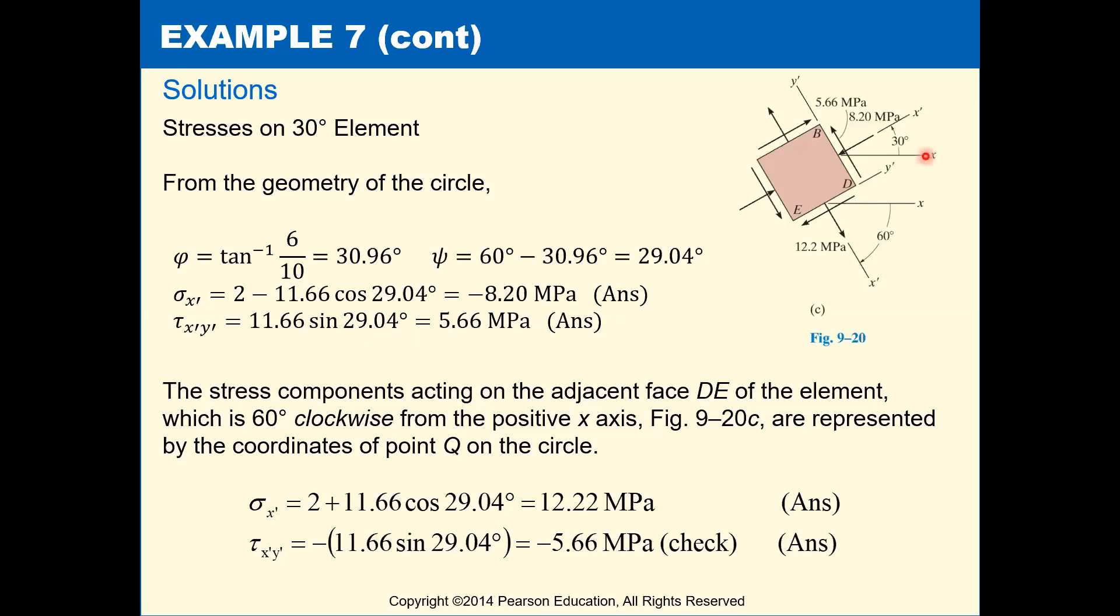So then you can start to draw your element. So we're rotating from x to x' a positive counterclockwise 30 degrees. And our sigma x' is then a compressive 8.2 megapascals. Our tau x' y' on that face is going to be a positive 5.66 megapascals.